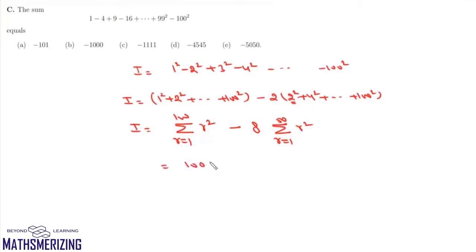Now this is n times n plus 1 times 2n plus 1 divided by 6, and then minus 8 times n times n plus 1 times 2n plus 1 whole divided by 6.